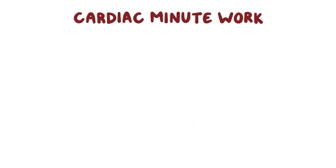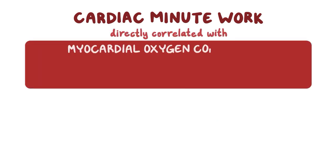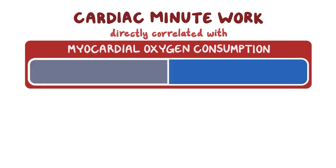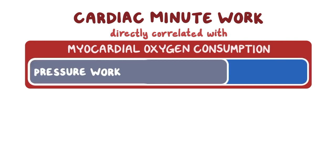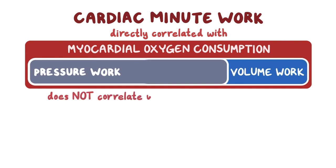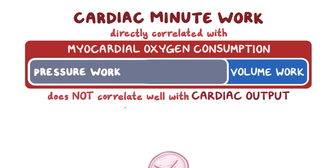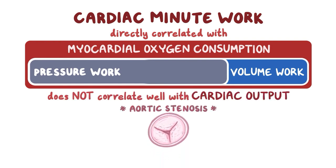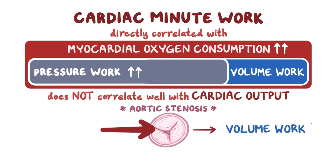Additionally, cardiac minute work is directly correlated with myocardial oxygen consumption. Interestingly, pressure work takes up much more myocardial oxygen consumption than volume work, which is why overall myocardial oxygen consumption does not correlate well with cardiac output. In the aortic stenosis example, the increase in pressure work greatly increases myocardial oxygen consumption, but less blood actually makes it past the narrowed aortic valve opening, so volume work decreases.